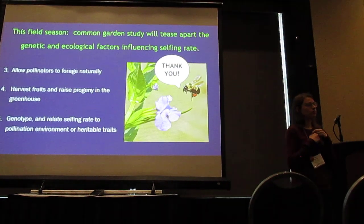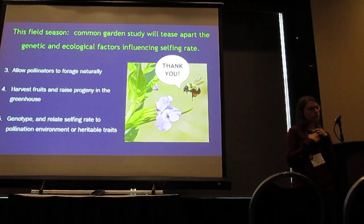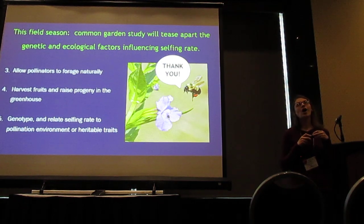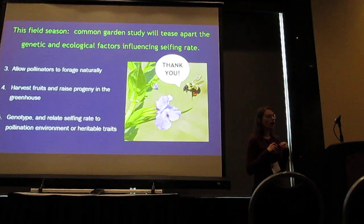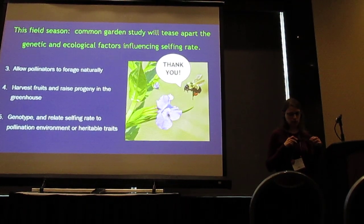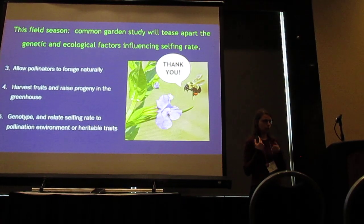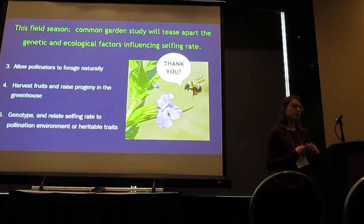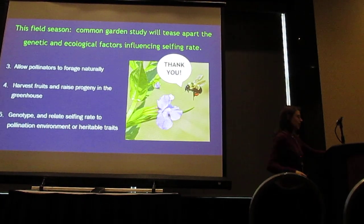Audience question: The variation in selfing rate is really interesting. Is there anything known about potential variation in the cost of selfing and the strength of inbreeding depression across populations? Response: We do have preliminary data on inbreeding depression. These data show that inbreeding depression ranges from 0.3 to 0.9, but we're still looking into that and the reasons behind it. We should have more information coming up soon. Thank you.